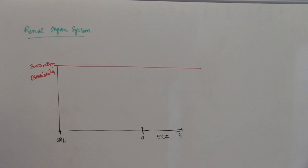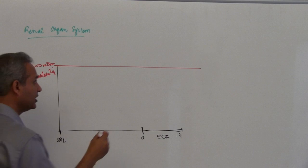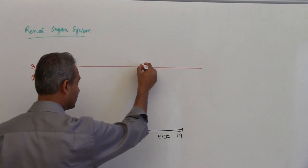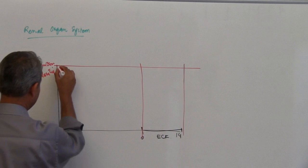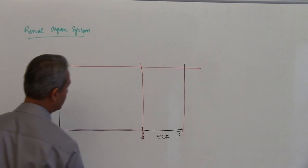So what I am constructing here is the Darrow-Yannet diagram, in which what we do is we will put this here, we will do this, and we will have this over here.